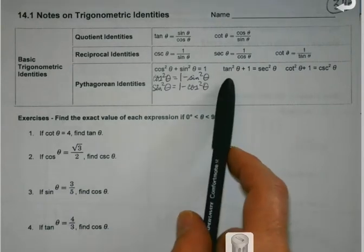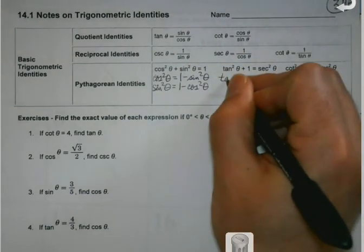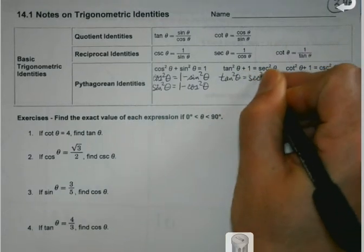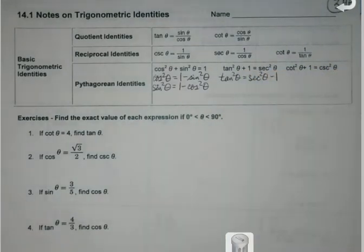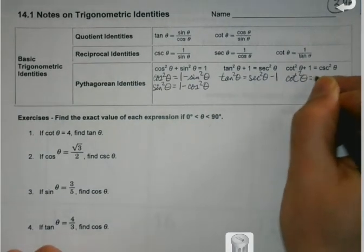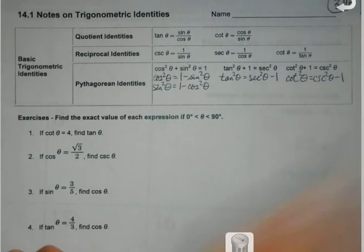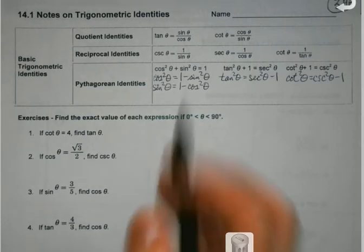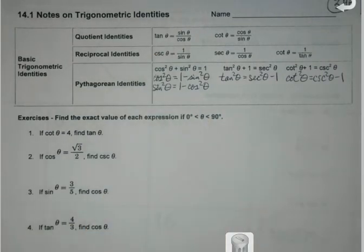I could do the same thing with sine if I wanted sine on a side by itself. I could solve that identity for sine squared. You can manipulate these if you wanted a negative cosine or a negative sine. If I wanted tangent by itself, I could do tangent squared equals secant squared minus one. All of these are interchangeable.